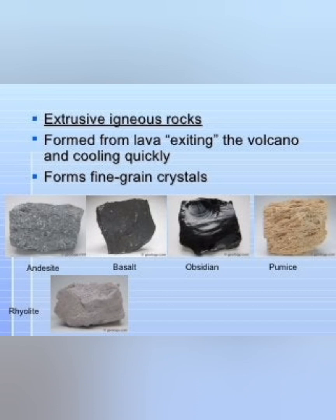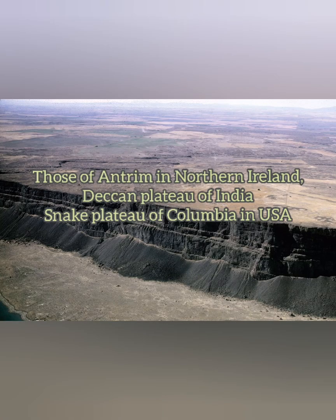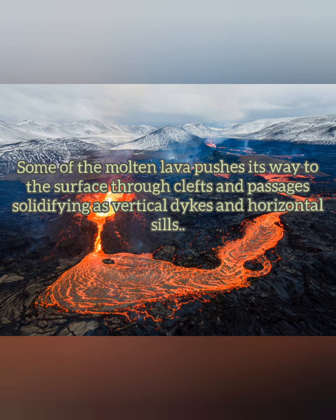Basalt is a common extrusive igneous rock. Other examples are obsidian, pumice, rhyolite, and andesite. Examples of extrusive igneous rocks are found in Antrim in North Ireland, the Deccan Plateau of India, and the Snake Plateau in U.S. Columbia. Molten lava comes to the surface through different crevices and cracks formed during volcanic eruption, through vertical dikes or horizontal silts, where it solidifies and forms extrusive igneous rocks.